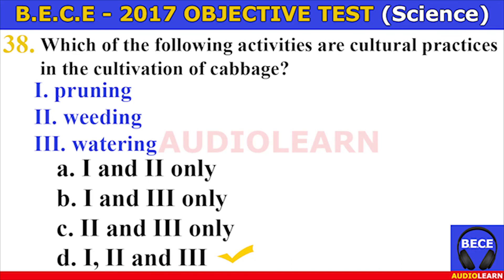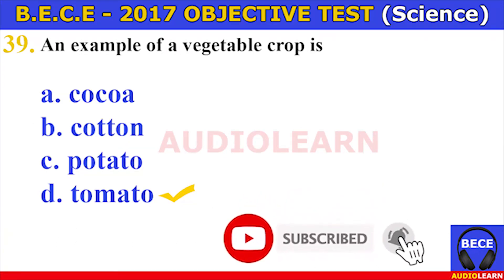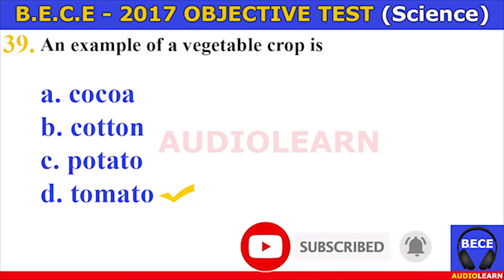Number thirty-seven. Which of the following factors should be considered when selecting a site for vegetable crop production? I. Nearness to the market, II. Topography of the land, III. Nearness to the sea. The possible answers are A. I and II only, B. I and III only, C. II and III only, D. I, II, and III. The answer is A — nearness to the market and topography of the land.